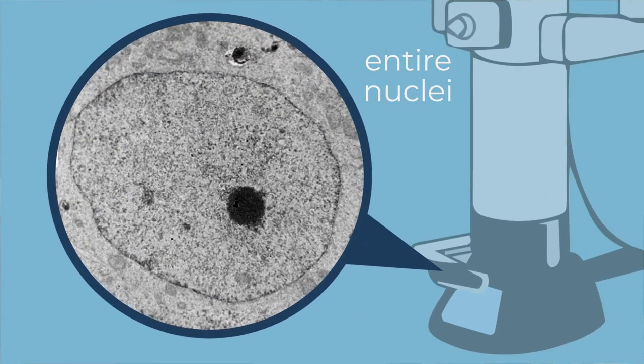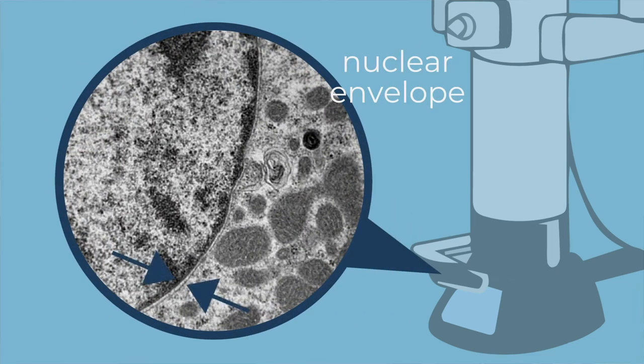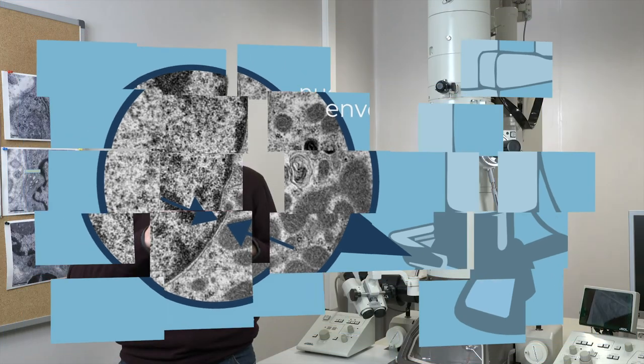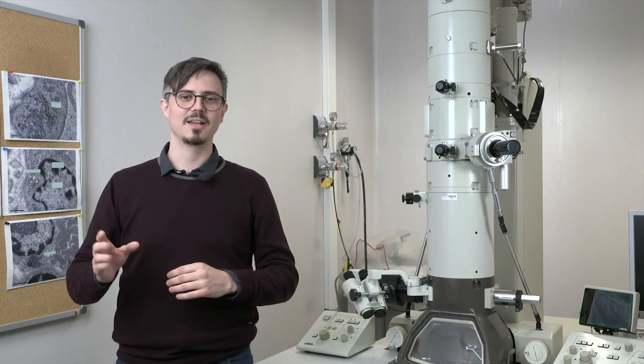Here we can see not only the entire nucleus, that is about 5 to 6 micrometers long, but also the tiny nuclear envelope with its two layers. These two layers are separated by 50 nanometers, that are 20 times smaller than a micrometer.